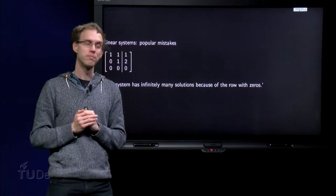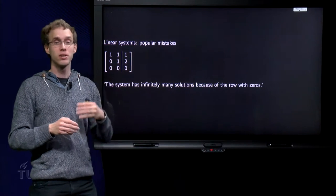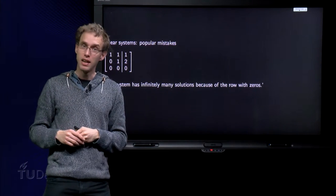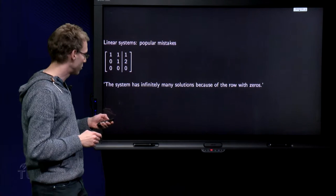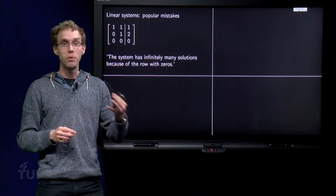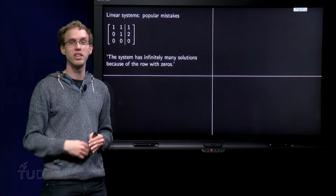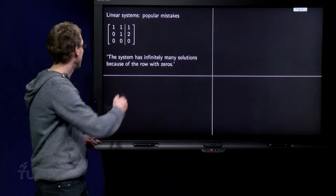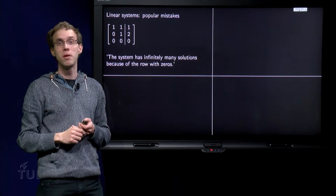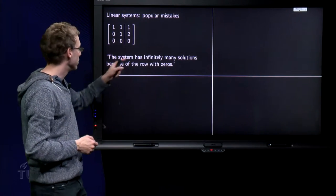So, the first one. Here we have an augmented matrix, row reduction has already been done, and then we see the system has infinitely many solutions because of the row with zeros. The row of zeros over here. Well, a row with zeros means zero times x1 plus zero times x2 equals zero. So zero equals zero. It doesn't tell you anything. I could add over here ten rows with only zeros, and I would still have the same solution set. So a row of zeros by itself, that doesn't mean anything. So this argument is incorrect.